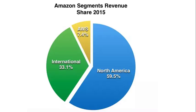Amazon earn 33 percent of their revenues from their international markets, from selling overseas. Amazon are growing rapidly outside of North America, which is their base, particularly into markets like India and China and other emerging markets.